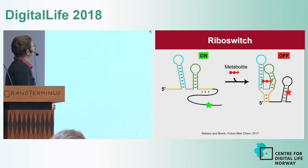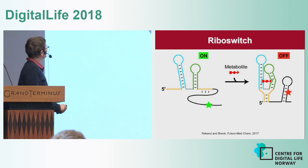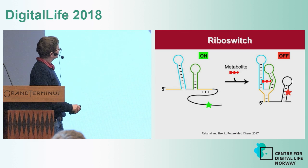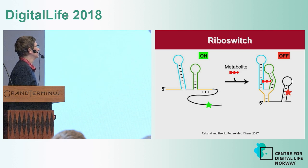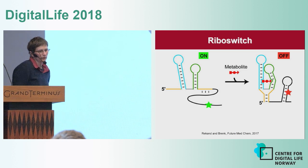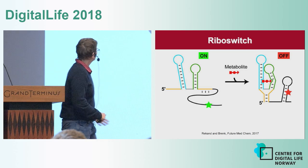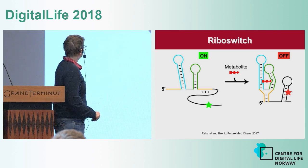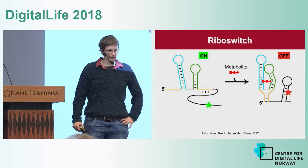This is an example of an off riboswitch. If no metabolite is bound to the aptamer domain, then gene expression is switched on. But if a metabolite binds, the aptamer changes conformation, forming a terminator loop in the expression platform, and expression of the following genes is switched off. There are also on riboswitches that work the other way around: no metabolite binding means gene expression is off, and binding the metabolite turns gene expression on.